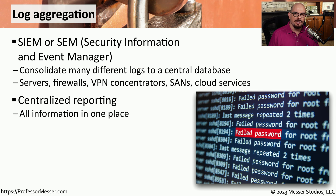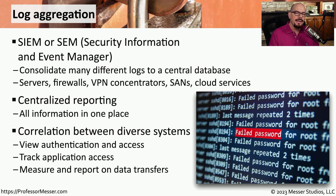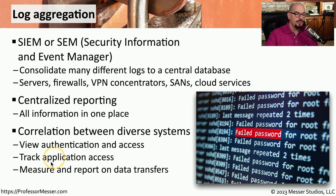Because all of these logs are now consolidated in one central place, it makes it very easy to start creating reports from a single reporting engine. You can begin comparing and correlating data across what used to be very diverse types of data. For example, you might be able to look at a report that shows authentication to the VPN concentrator and then shows what type of information was accessed once the user was brought onto the network. You could also create reports showing what type of access users have to an application, and measure how much data has been transferred to understand normal baselines and get an alert if you exceed those numbers.